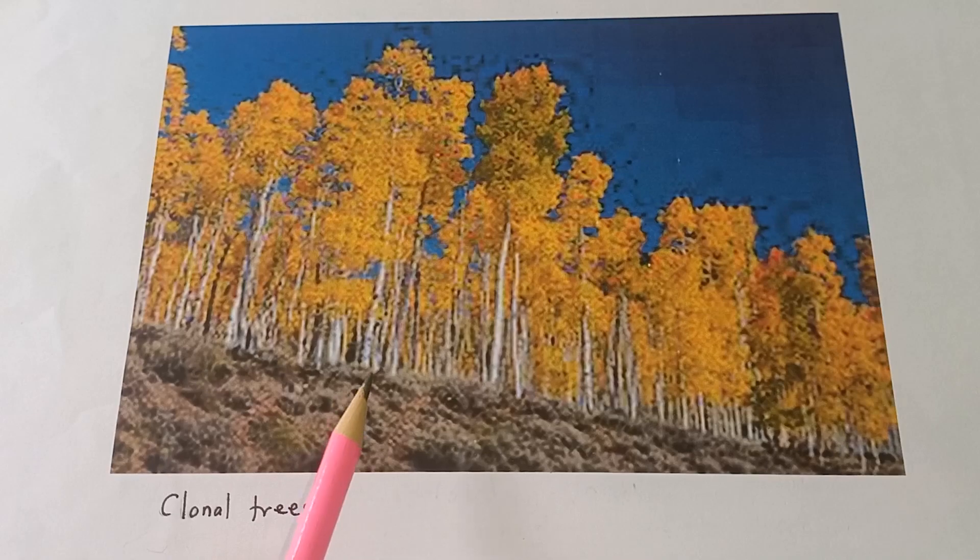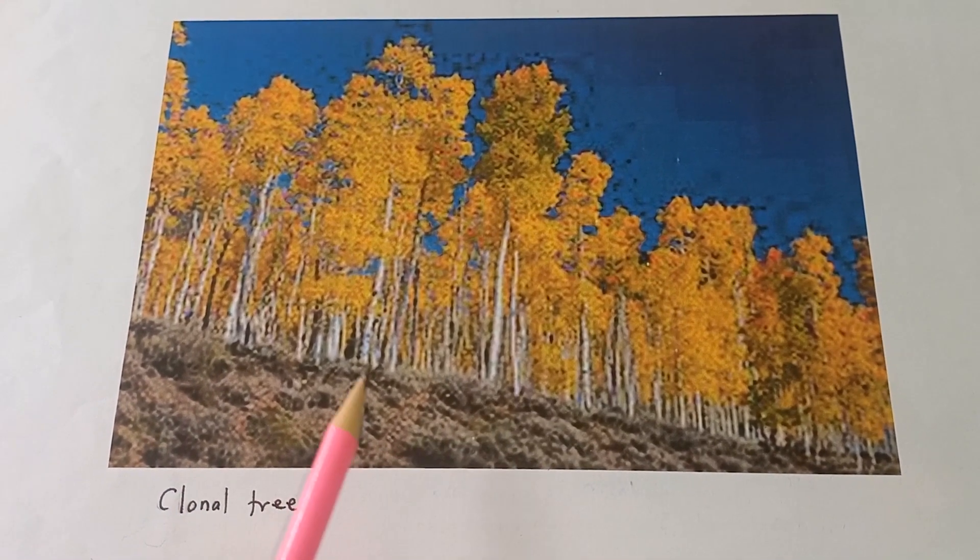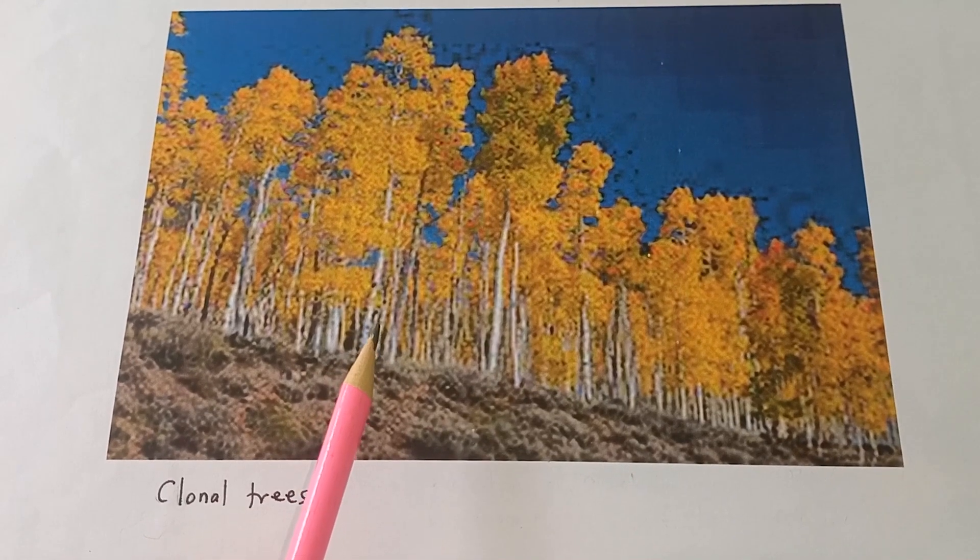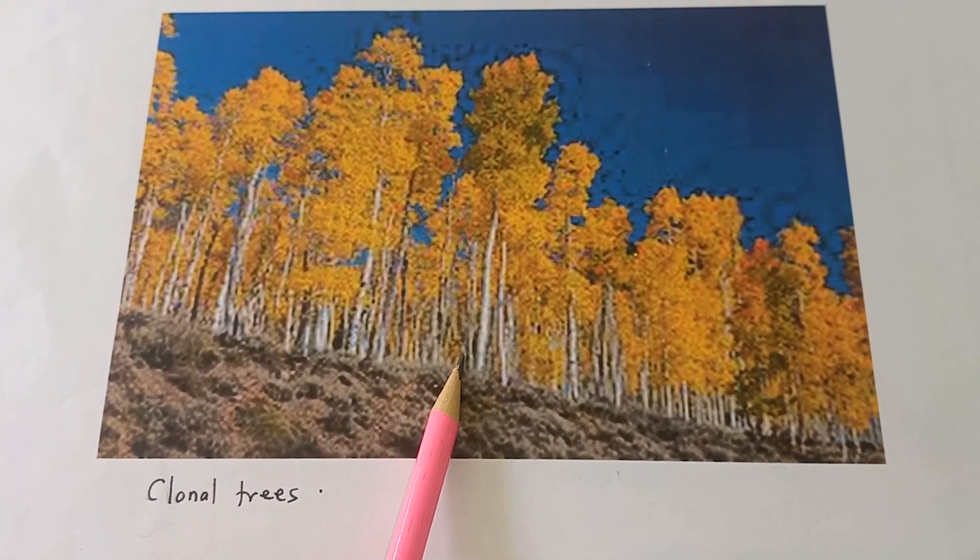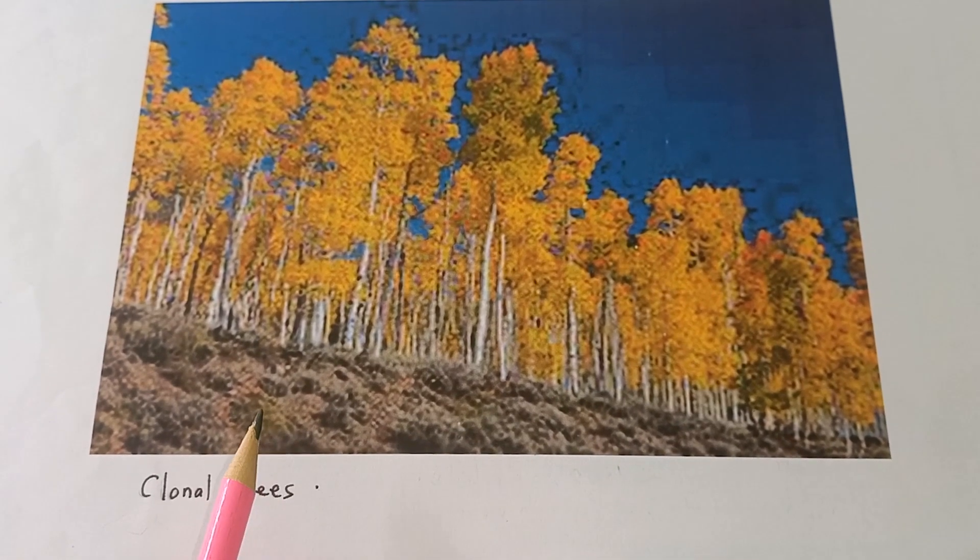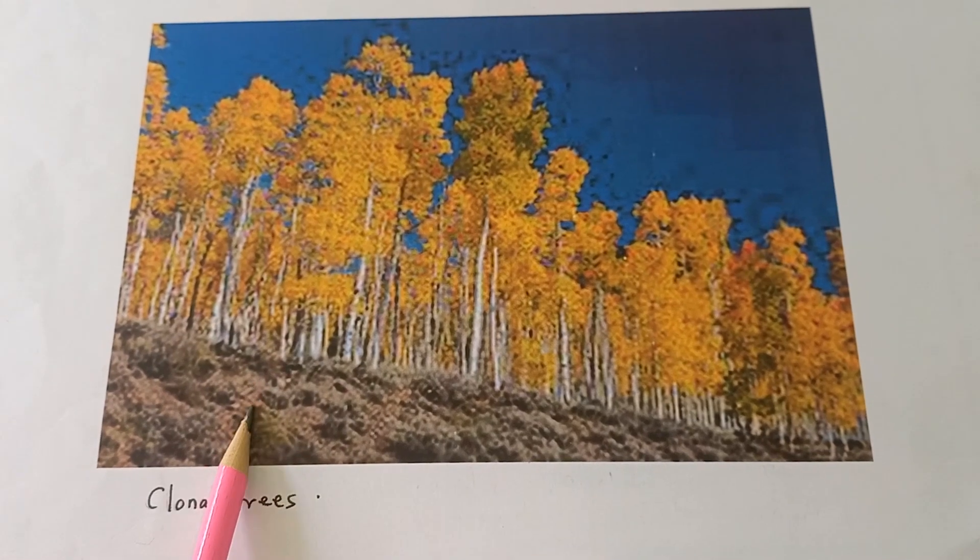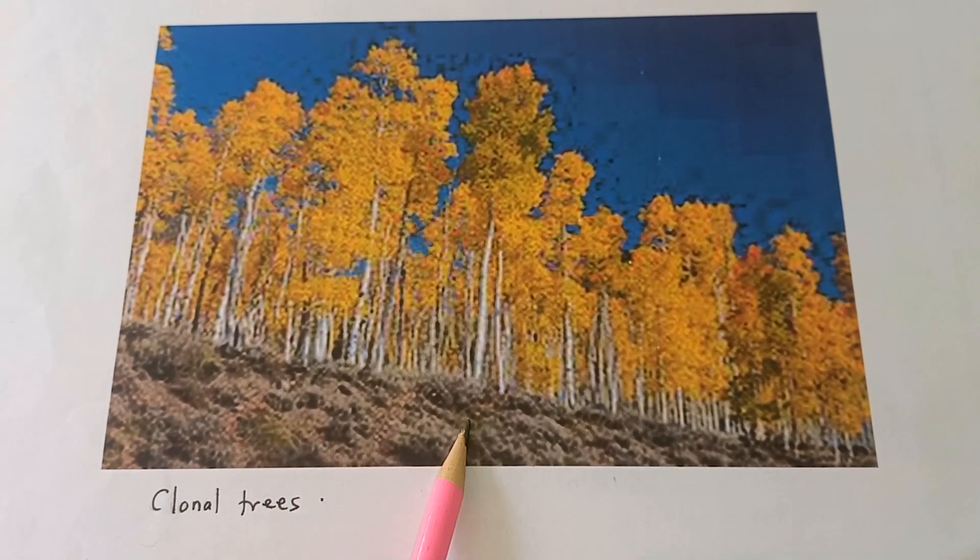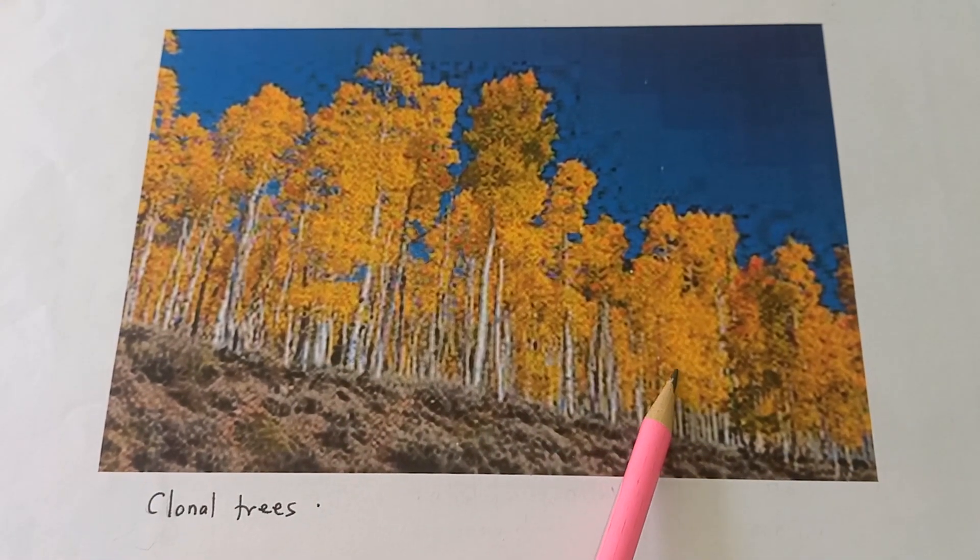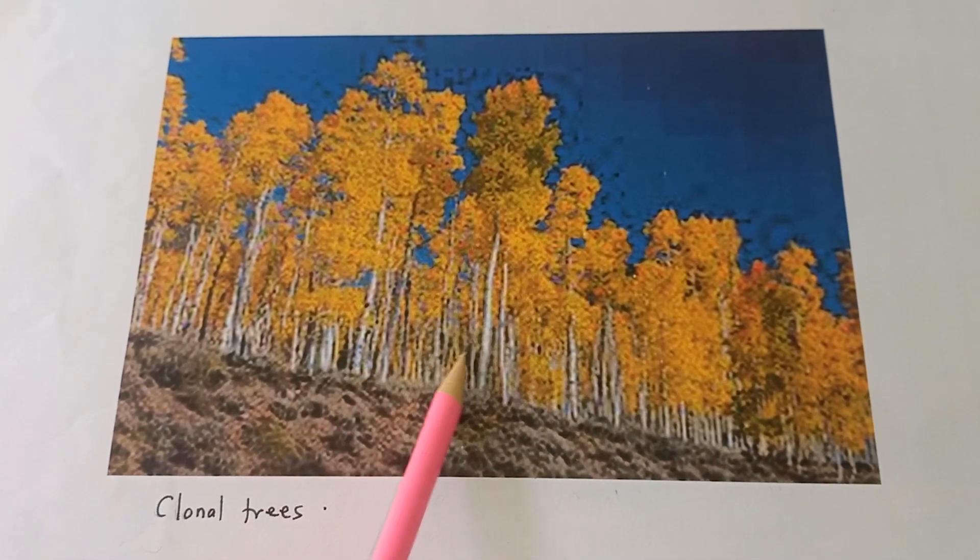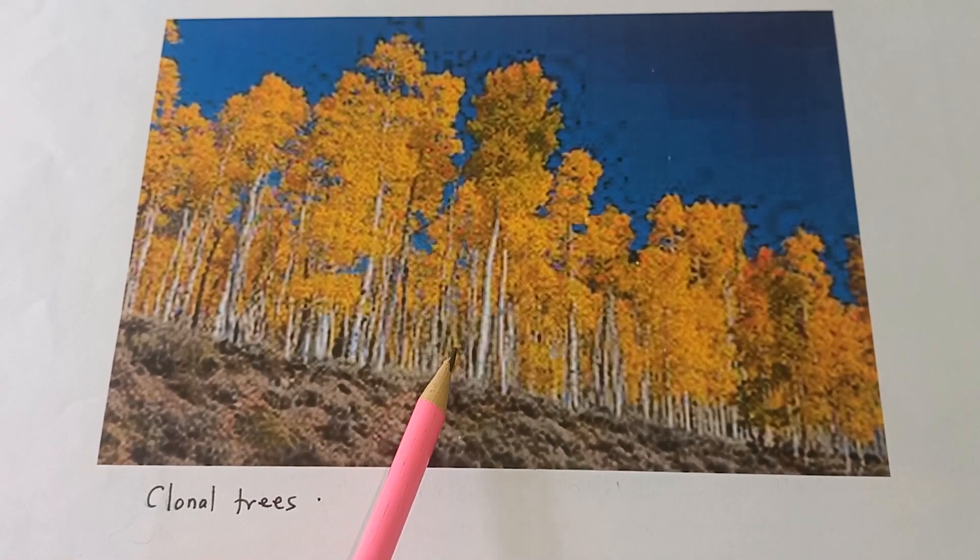There are clonal trees like this one, Pando, in Utah that also live for thousands of years. The colony of this one called Pando has lived for 80,000 years, and the colony covers about 106 acres of land with 48,000 trees. But individual trees have been estimated to live for 130 years.